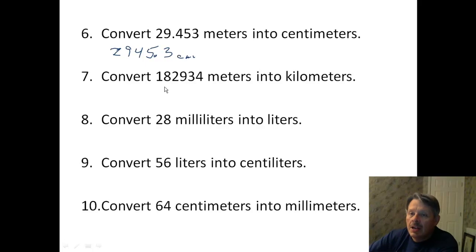All right, I now have to go from meters to kilometers. Well, there are 1,000 meters in one kilometer. So that means I have to move my decimal three positions. So there are going to be 182.934 kilometers.